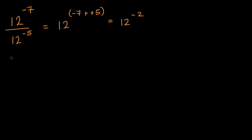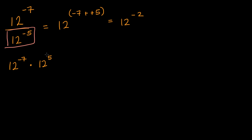And once again, we just have to think about why this actually makes sense. You can rewrite 12 to the negative seven divided by 12 to the negative five as 12 to the negative seven times 12 to the fifth power — if you take the reciprocal of 12 to the negative five, you make the exponent positive. And then you get exactly what we were doing in those previous examples with products. So let's just do one more with variables for good measure.